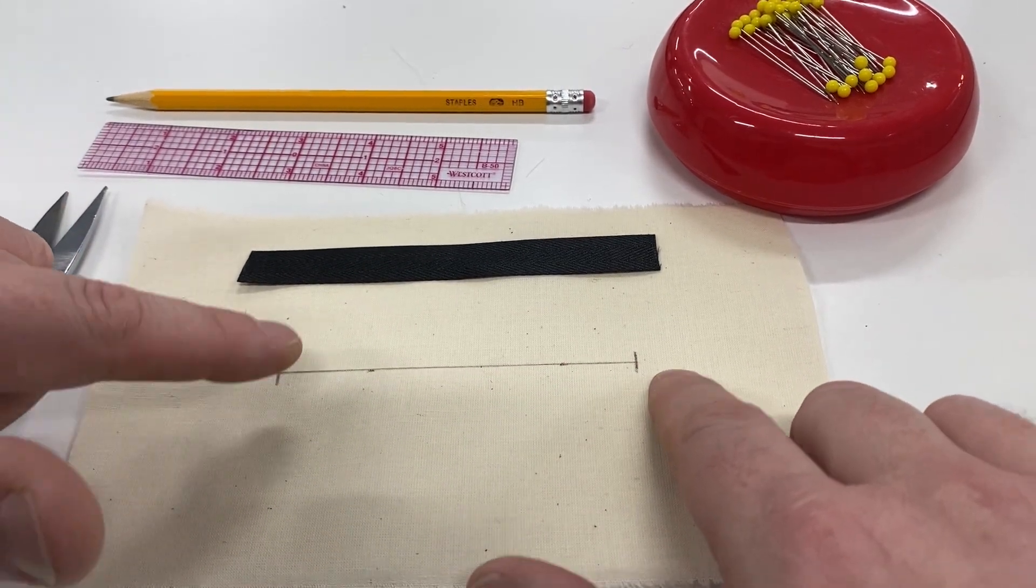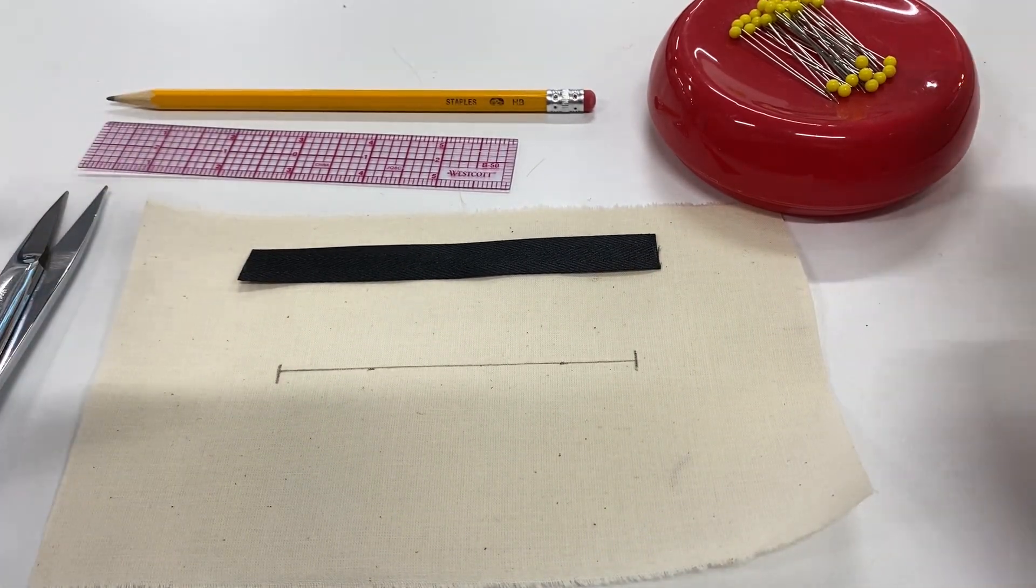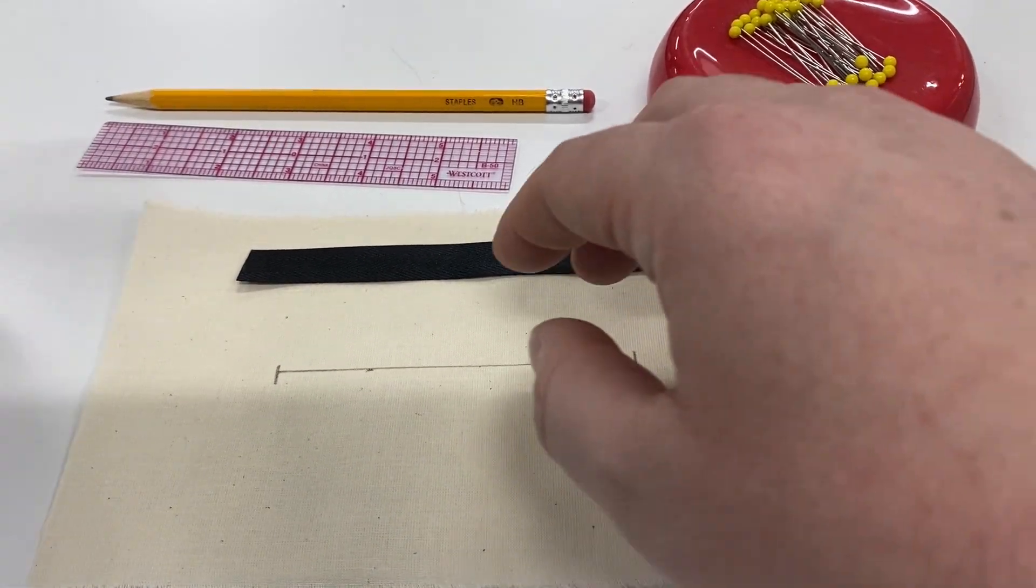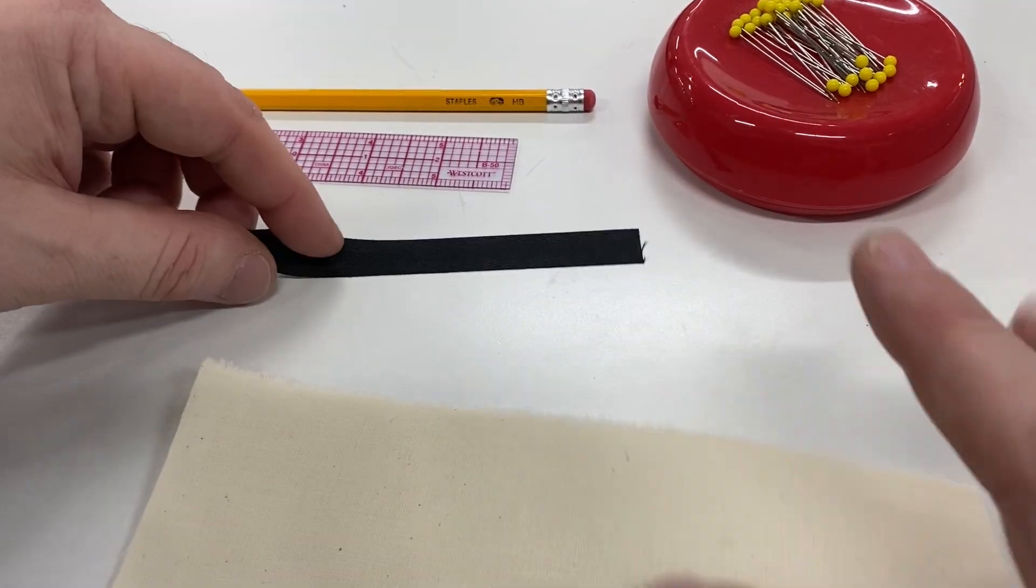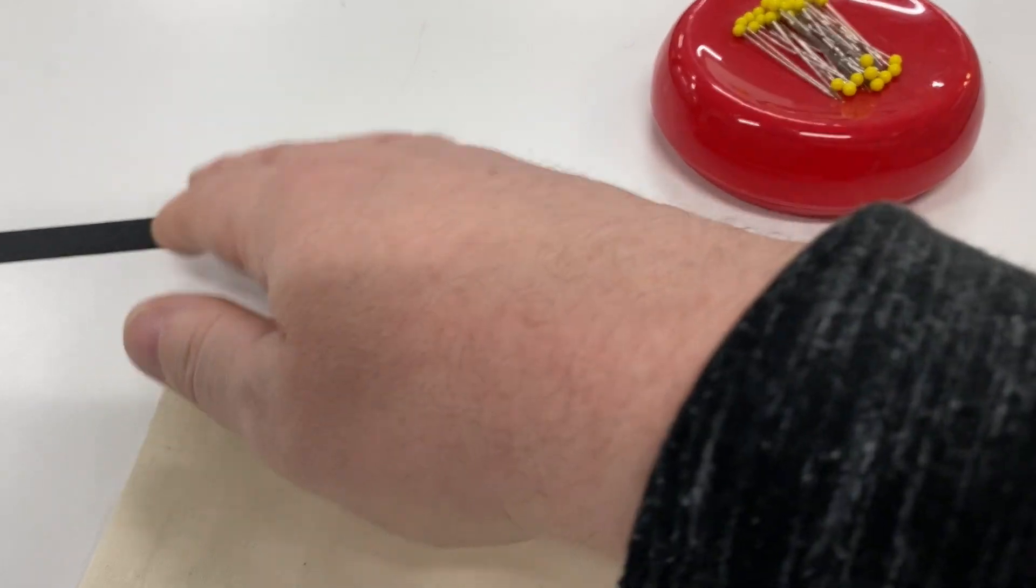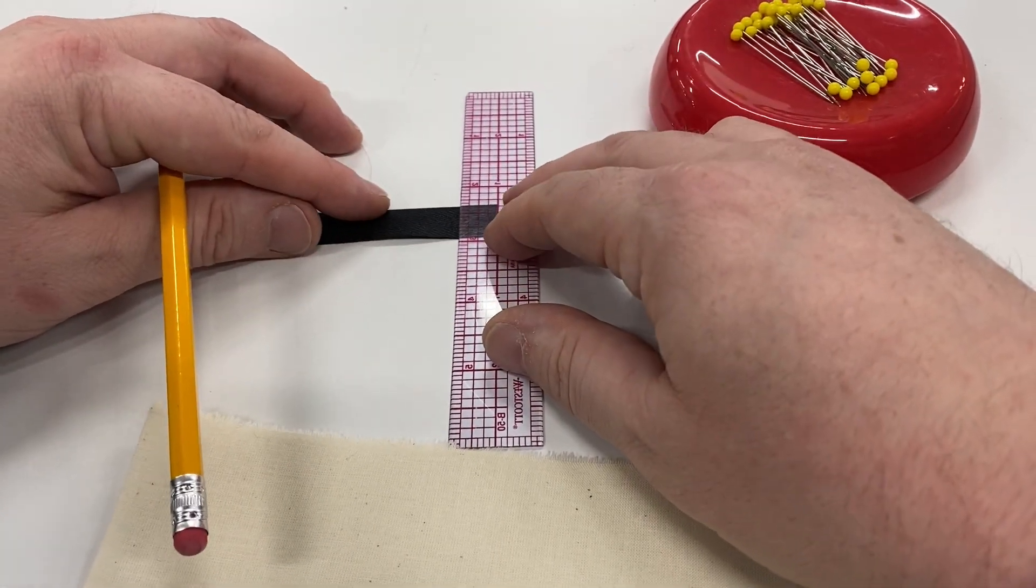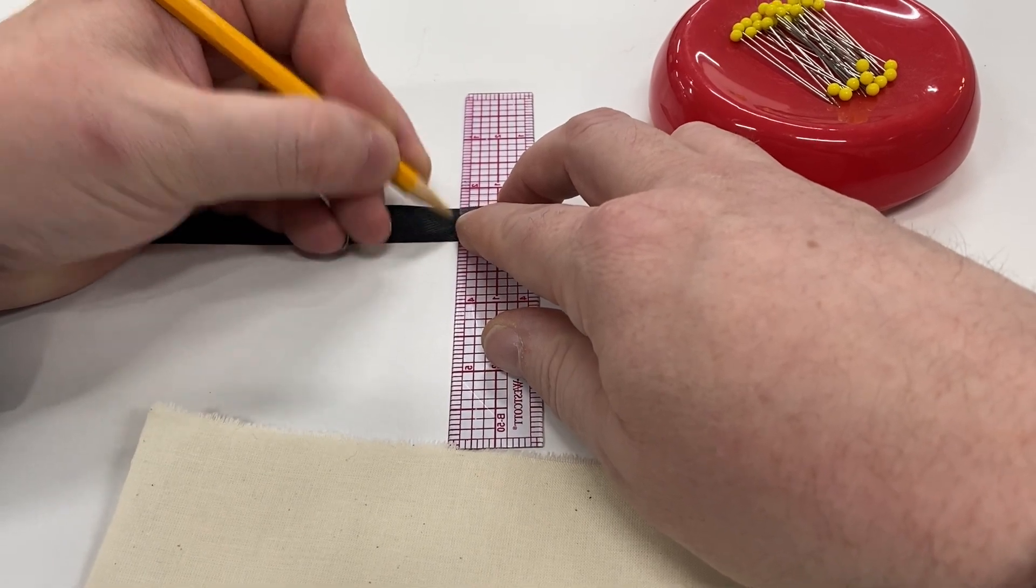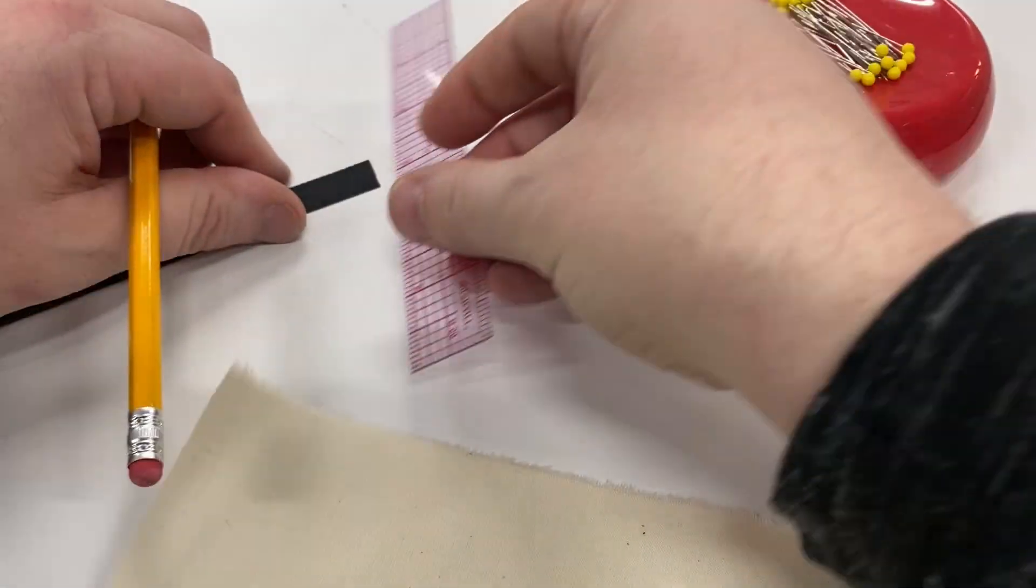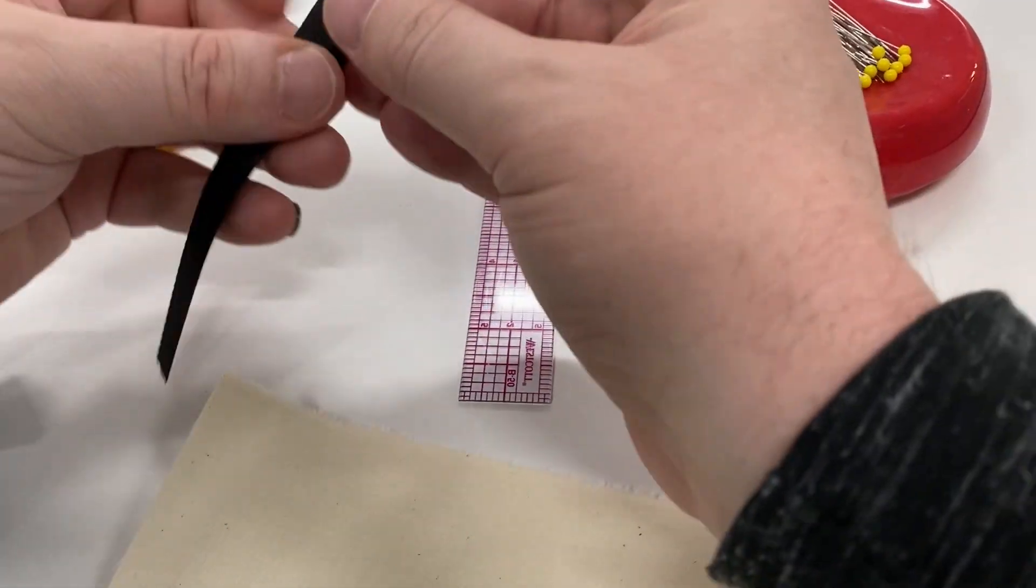You're going to need this sample piece with your four inch line drawn on it, a five inch piece of twill tape, a ruler, a pencil, some pins, and your trusty snips. First things first, I want you to take your piece of twill tape and mark those half inch turn backs that we marked on the last sample to finish off the edge. I'm going to put a little pencil mark there and another pencil mark there at half inch.